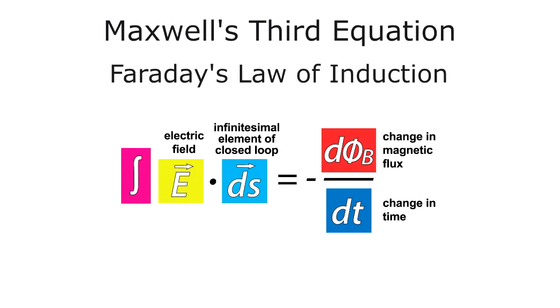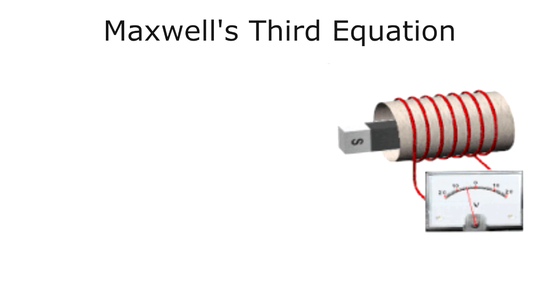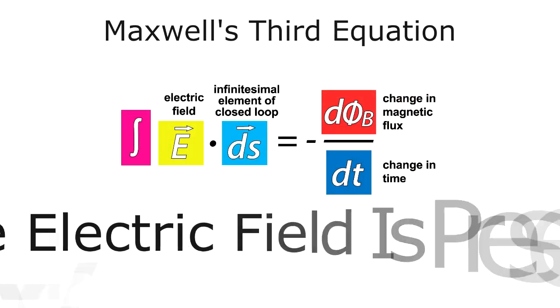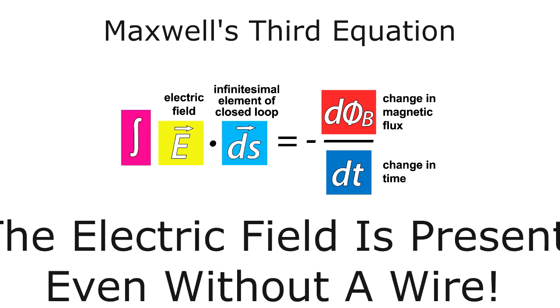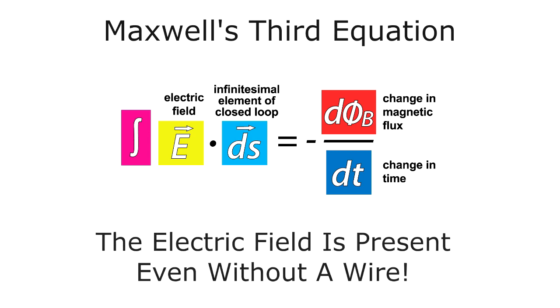Maxwell's third equation is Faraday's law of induction. Remember from module 6 we saw that Faraday's law of induction says that a changing magnetic field will induce an EMF, an electromotive force, in a loop of wire which then drives the current in that wire. Maxwell made the assumption that this electric field is present even without the conducting loop of wire.